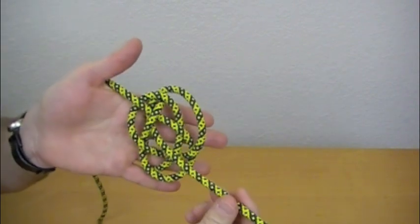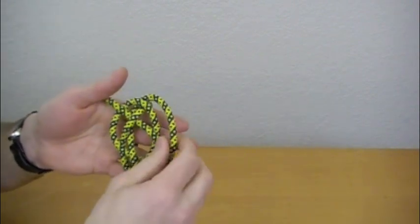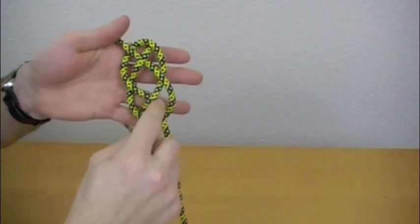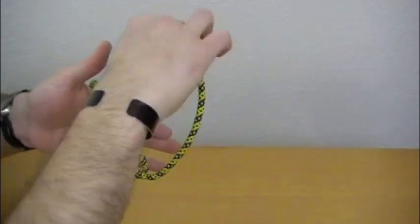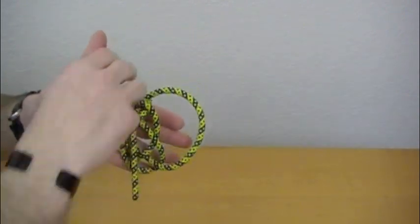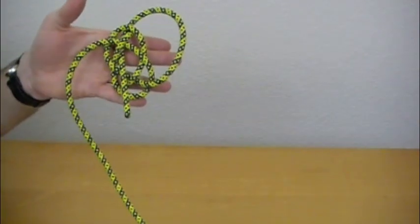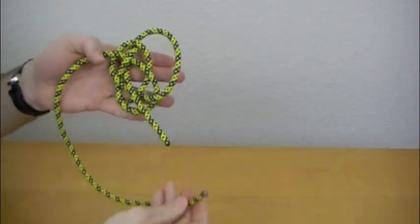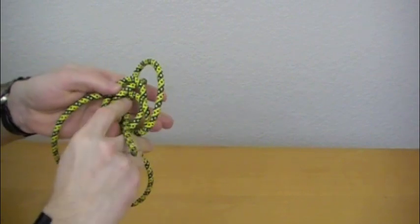Now, this can kind of get a little tricky if you're not paying attention here. Just remember that diamond in the middle comes back around through and in. The same for this side. This is going to come around the back and inside of that diamond.